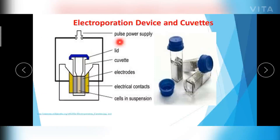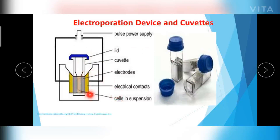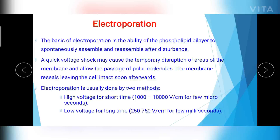Looking at the electroporator device: inside it, you place cuvettes loaded with the transfection mixture. The transfection mixture contains cell suspension, the target DNA, and buffer. You keep the cuvettes containing the transfection mixture into the machine and supply power. An electric shock or impulse at high voltage for short time — 1000 to 10,000 volt per centimeter for a few microseconds — is created. At low voltage, it is for longer time in milliseconds: 250 to 750 volt per centimeter. The basis of this electroporation technique is the ability of the phospholipid bilayer to spontaneously assemble and reassemble after disturbance.